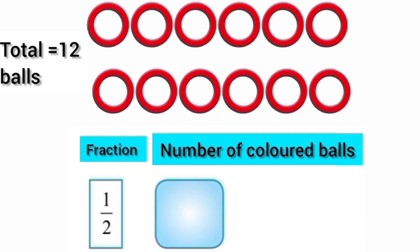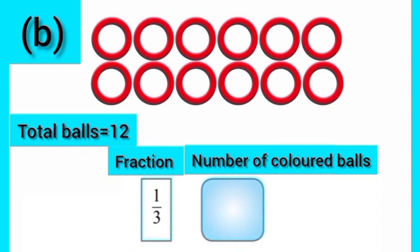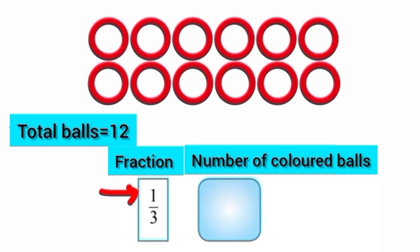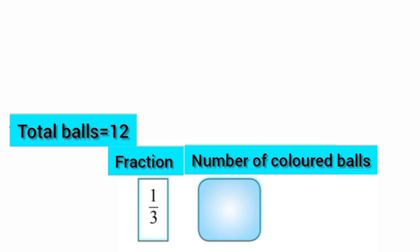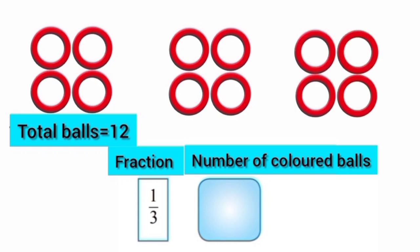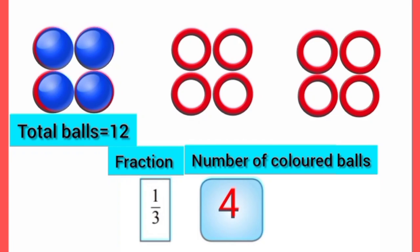So dear students, we have divided these 12 balls into 2 equal parts and colored one part. The number of colored balls is 6. Now the fraction is 1 upon 3. It means out of 3 equal parts, one part should be colored. Let's divide these 12 balls into 3 equal parts. Now we have colored one part of these balls. So the number of colored balls is 4.